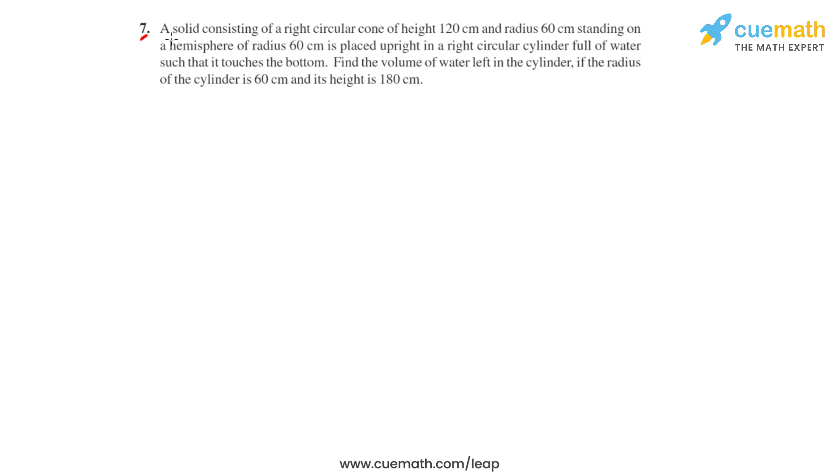Question number 7 says that a solid consisting of a right circular cone of height 120 cm and radius 60 cm standing on a hemisphere of radius 60 cm is placed upright in a right circular cylinder which was full of water such that it touches the bottom.